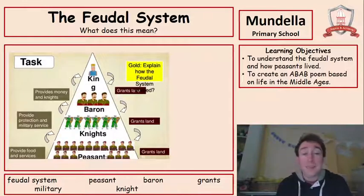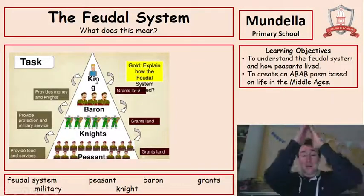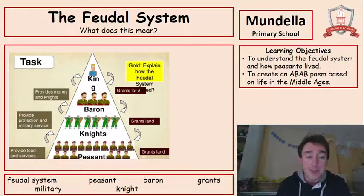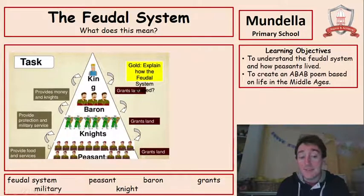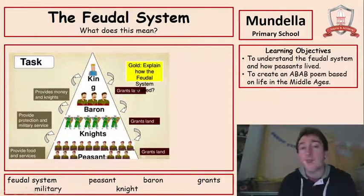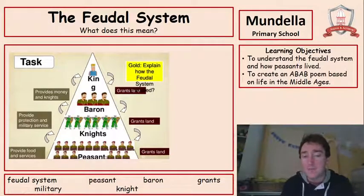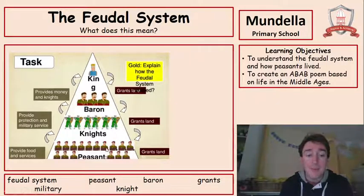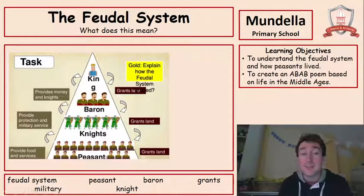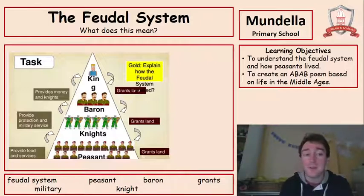The feudal system was the way of life back then. We had the king on top, in charge of everything, at the top of the mountain, then the barons below him, then the knights, and then at the very bottom, the least important — the peasants — who worked hard on the land to provide food, money, and services for everyone above them. There were more peasants than any knights, barons, or the king — lots of peasants — often referred to as the poor people who worked on the land.